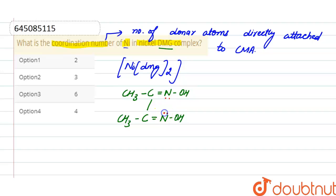So there are two DMG ligands present and one DMG has two donor atoms.